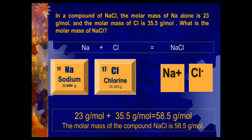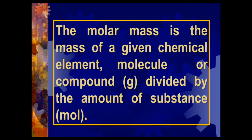Another example — in a compound of NaCl, the molar mass of Na alone is 23 g/mol and molar mass of chlorine is 35.5 g/mol. What is the molar mass of sodium chloride? One sodium: 23 g/mol, one chlorine: 35.5 g/mol. Add them: we get 58.5 g/mol. Therefore, the molar mass of sodium chloride (NaCl) is 58.5 grams per mole.